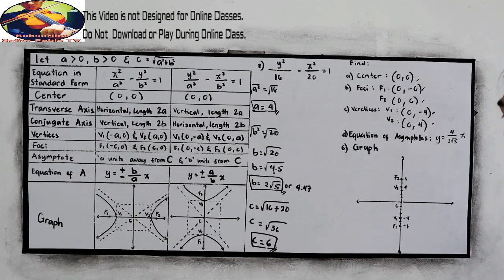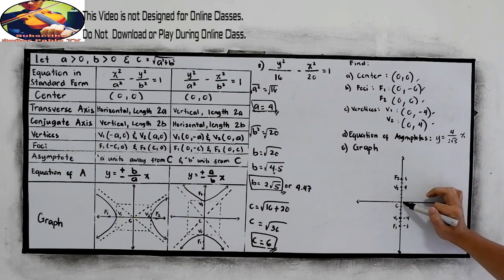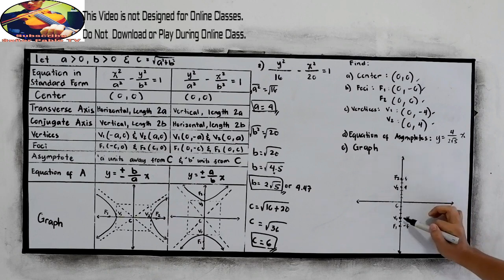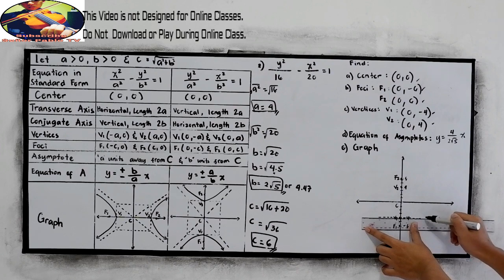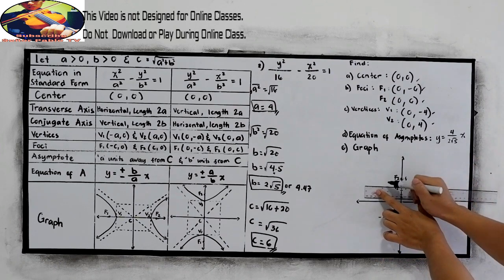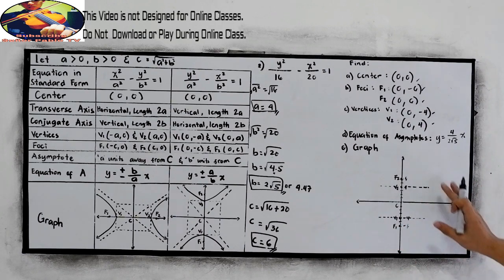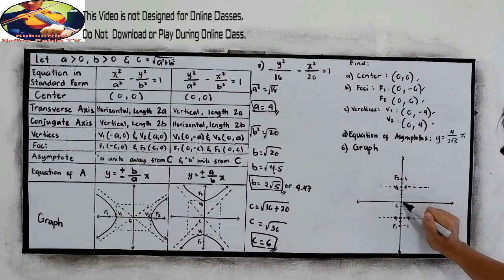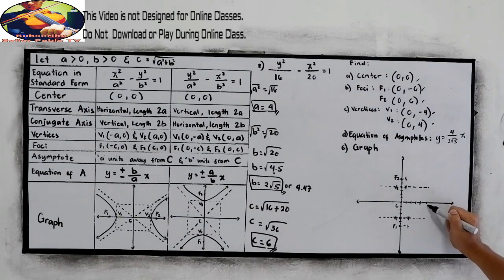We're now ready to draw our rectangle. A units away from the center — a is 4 — so count 1, 2, 3, 4 in both directions for the first sides of the rectangle. For the remaining sides, b units, which is approximately 4.5 — so between 4 and 5, at 4.47. On the left side, between negative 4 and negative 5.